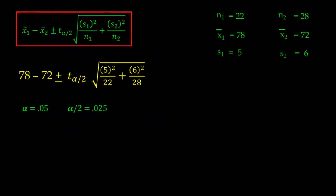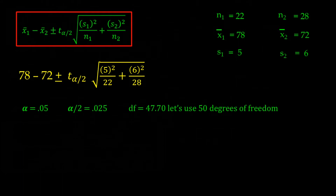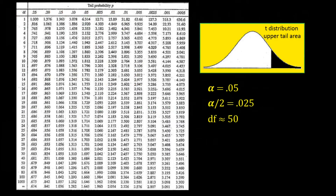We have alpha divided in half of 0.025 and degrees of freedom of 47.7. We're ready to look up the t-value, but I will round 47.7 to 50 degrees of freedom since the condensed t-table jumps from 40 to 50. Looking across degrees of freedom 50 and down alpha of 0.025, we get a t-value of 2.009.